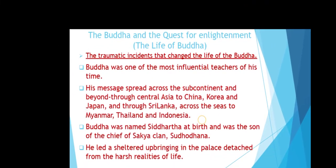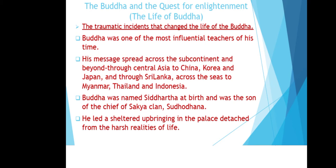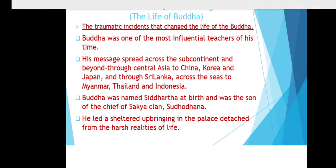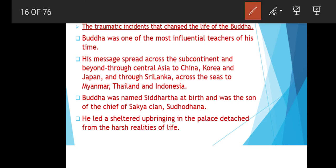Three traumatic incidents changed the life of Buddha. He was one of the most influential teachers of his time, and his message spread across the subcontinent and beyond — through Central Asia, China, Korea, Japan, Sri Lanka, Myanmar, Thailand, and Indonesia. Buddha was named Siddhartha at birth and was the son of the Sakya chief Shuddhodana. He had a sheltered upbringing in a palace, never exposed to the harsh realities of life.